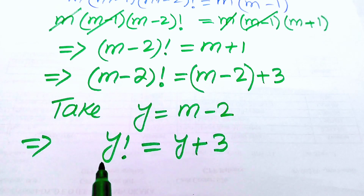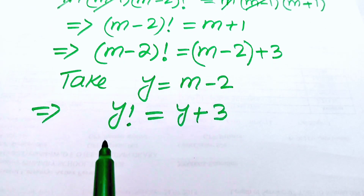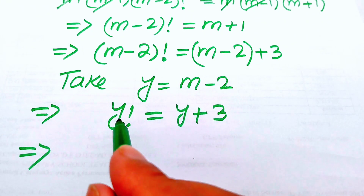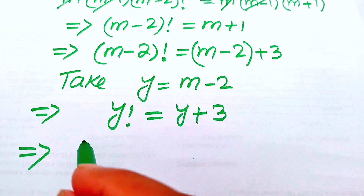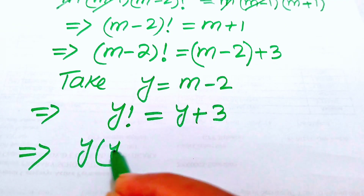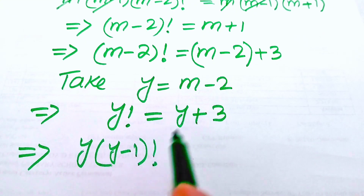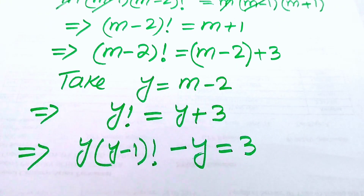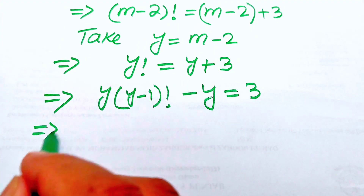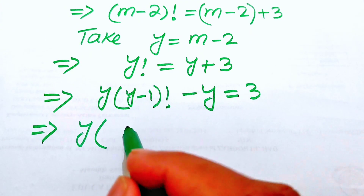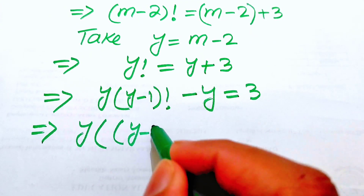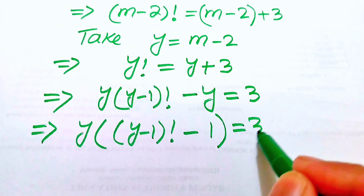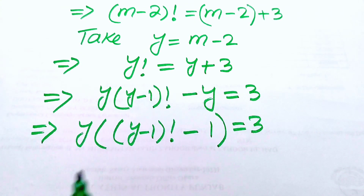We move y to the left-hand side and use the definition of the factorial sign. We expand y factorial up to the (y minus 1) term, writing it as y times (y minus 1) factorial. The equation becomes y times (y minus 1) factorial minus 1 equals 3. Taking y as a common factor gives y times [(y minus 1) factorial minus 1] equals 3.